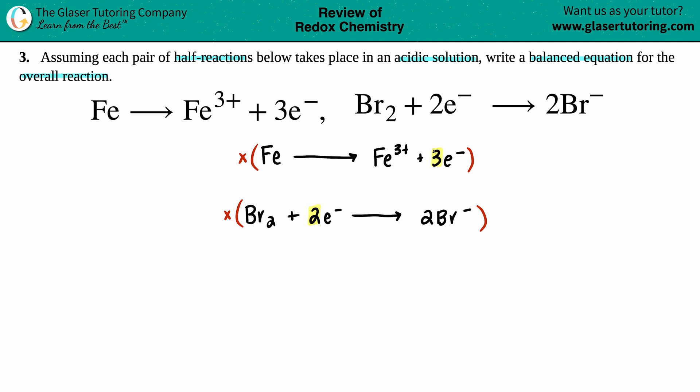I could take the three and times it by two—that will get me six electrons. And then I could take the two electrons times it by three and that will get me six. But you got to be fair: whenever you do this, you have to multiply all of the components in that equation.